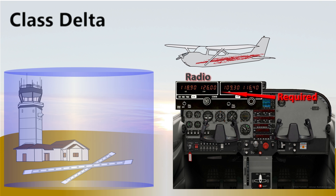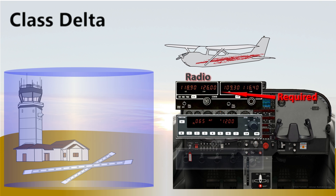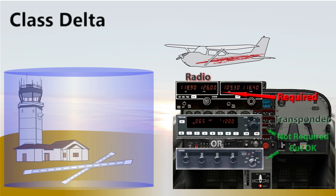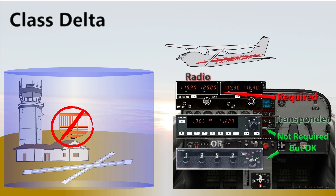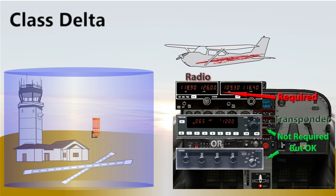Many people get confused and believe since there is a controlled tower that a Mode C transponder is also required. Although it is always helpful, an altitude reporting transponder is not needed, and the reason is that not all Class D airports have the luxury of having radar services. Some do have their own radar services. Many receive a feed from an overlying terminal or center radar control area, but some have nothing more than the controller's own eyes and a pair of binoculars.